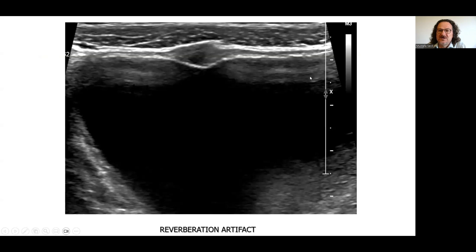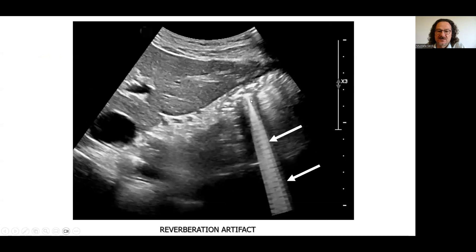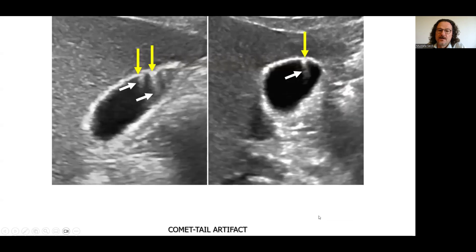This is an example of a reverberation artifact. The strong reflector is the anterior wall of the bladder, producing these reverberation artifacts. This is another reverberation artifact originating from gas inside the duodenum. When the strong reflector is a point, the artifact appears like a comet tail deep to the bright reflector.